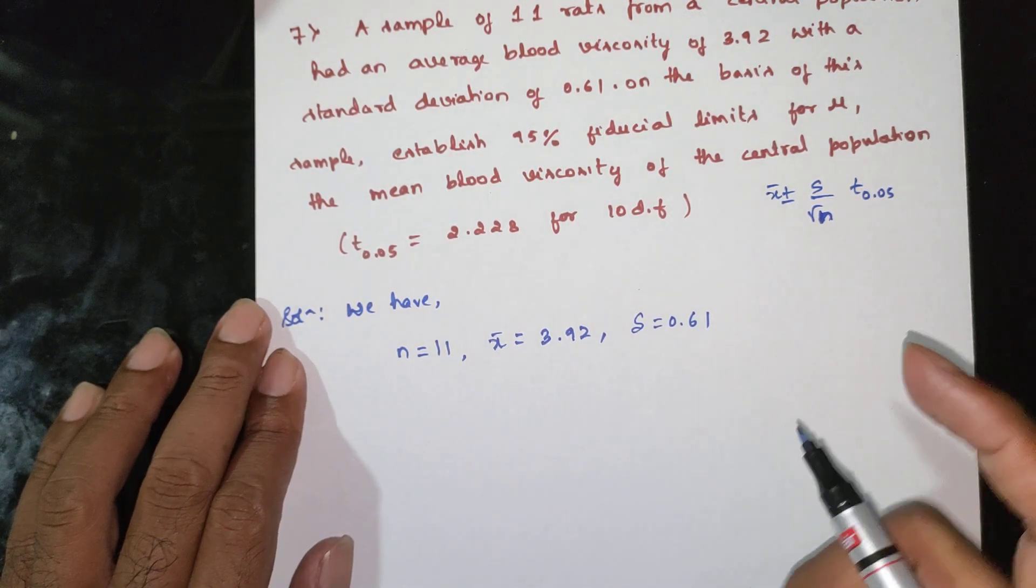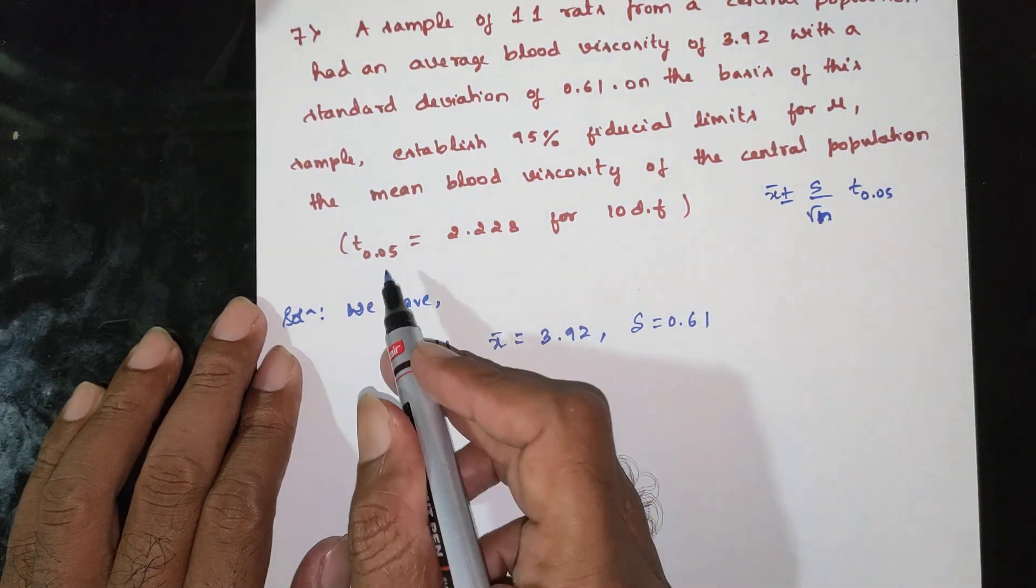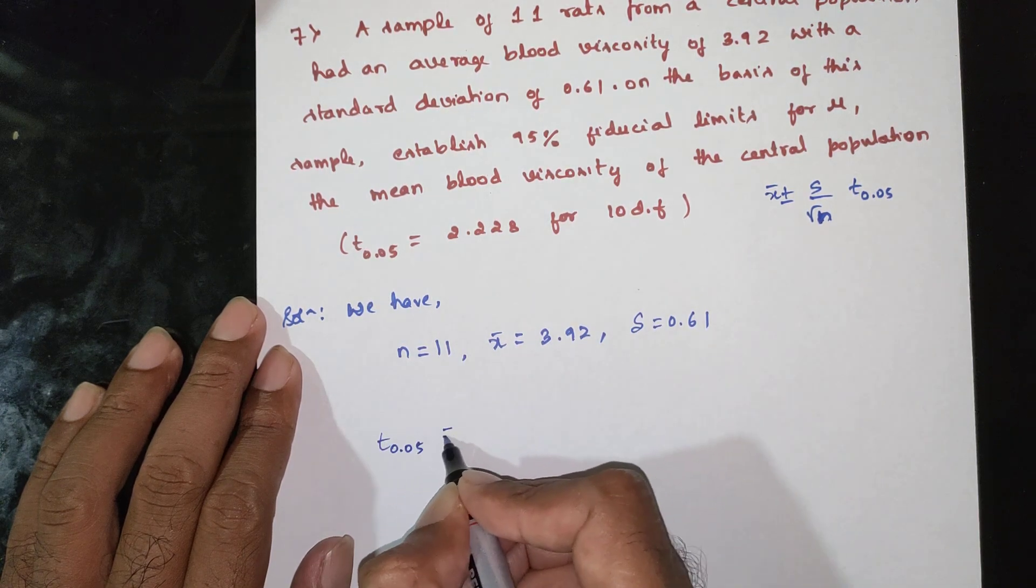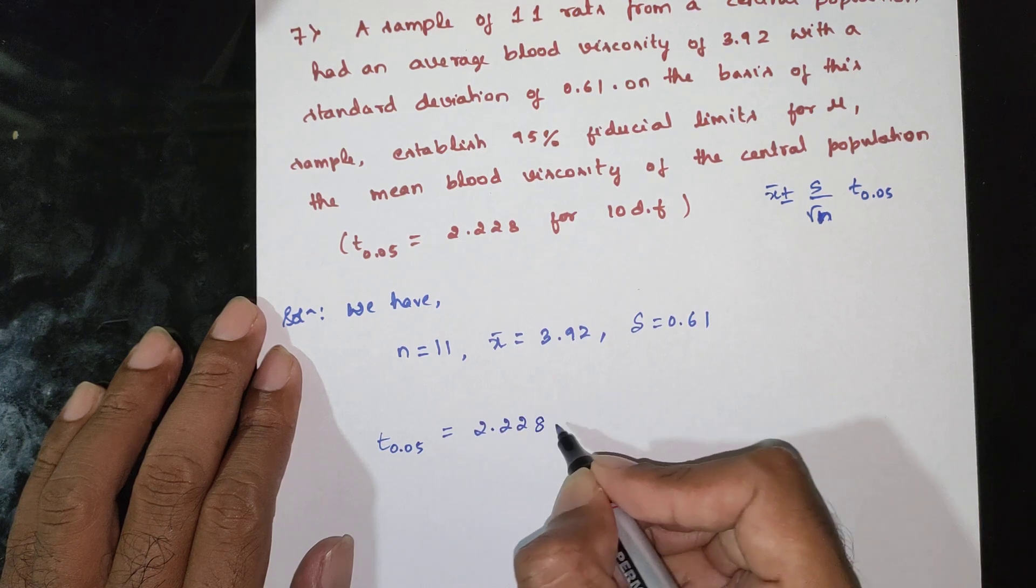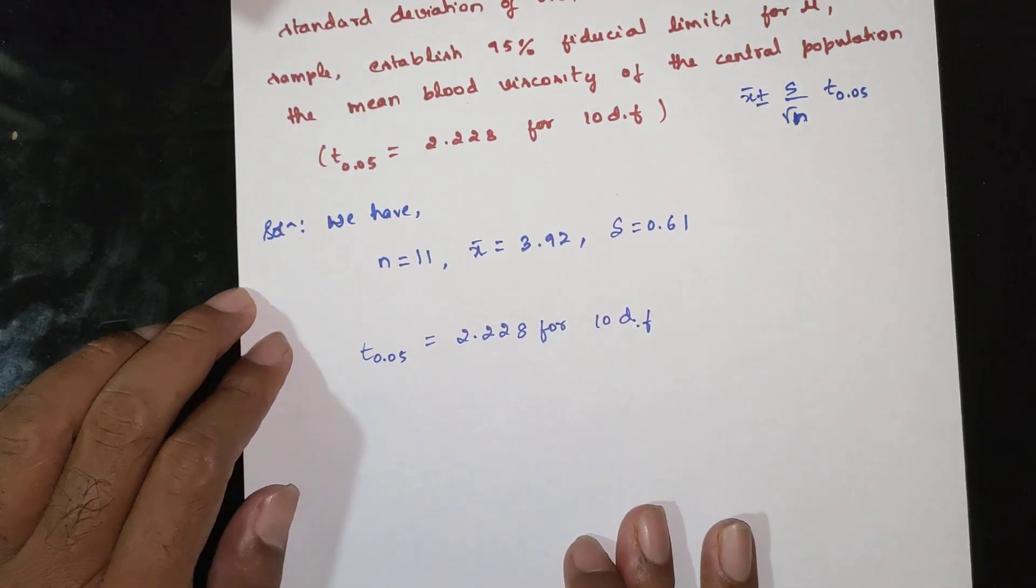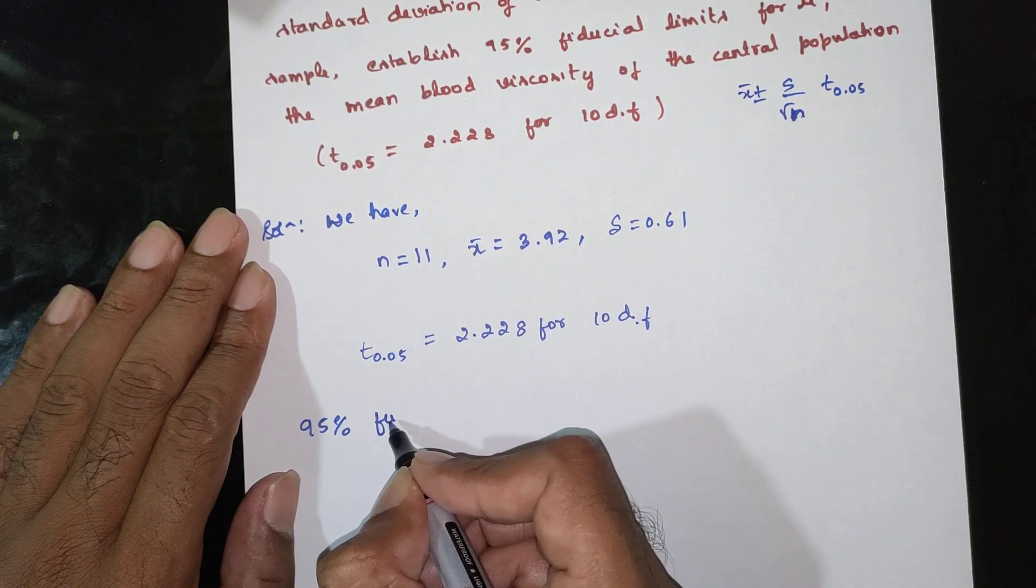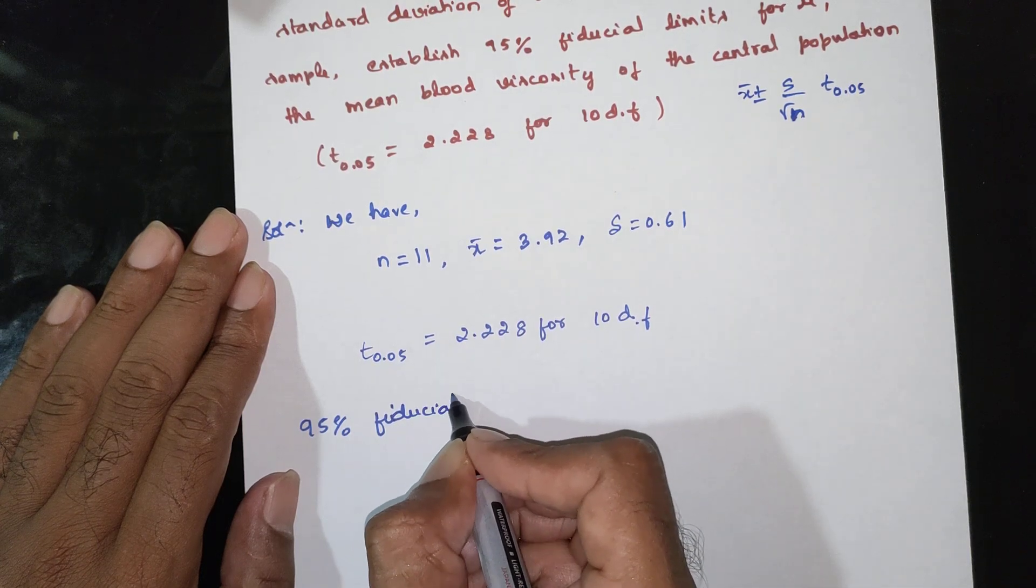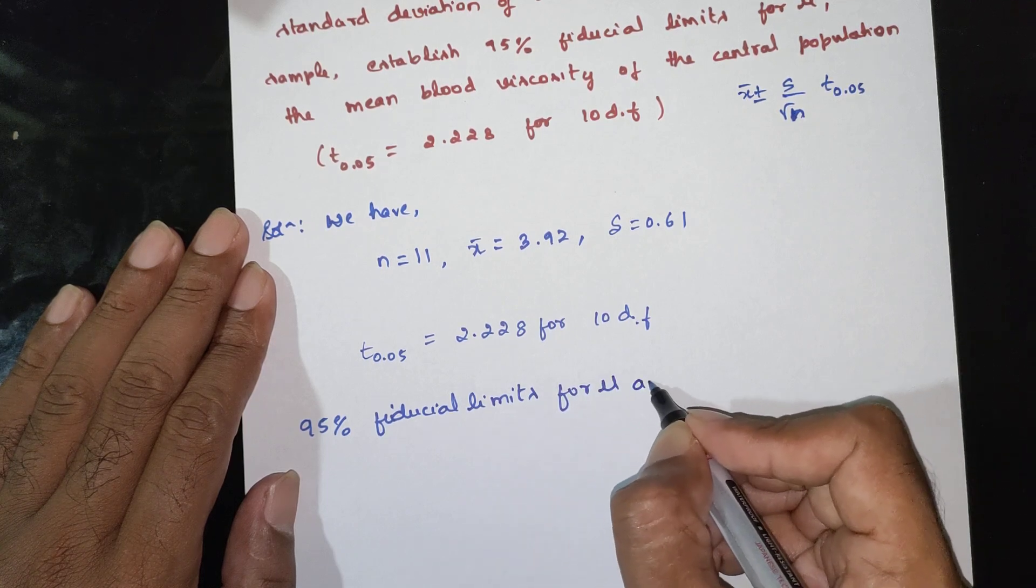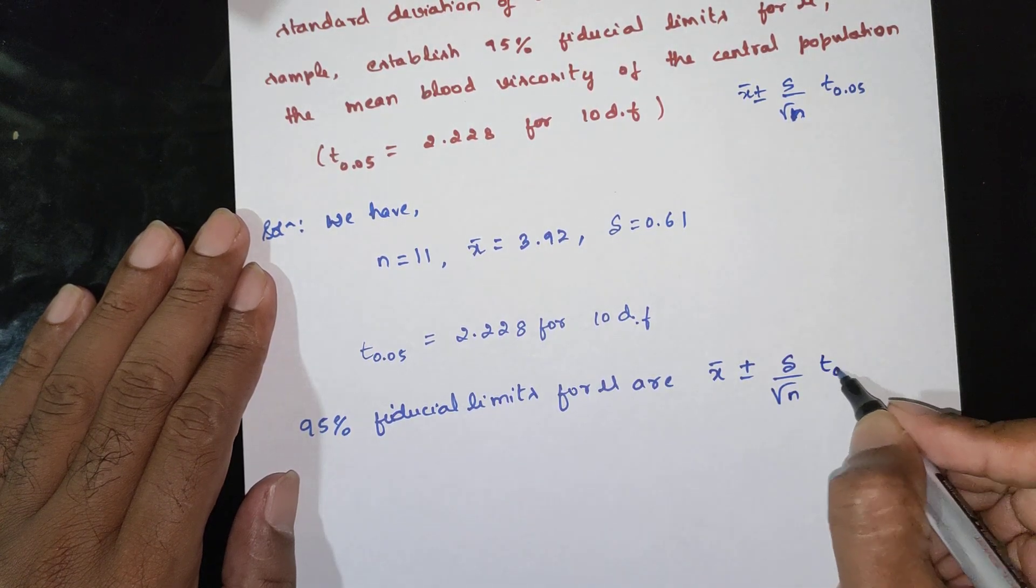Given t 0.05 equals 2.28. We have to discover the 95% confidence limits for mu, which are x bar plus or minus s by root n times t 0.05.